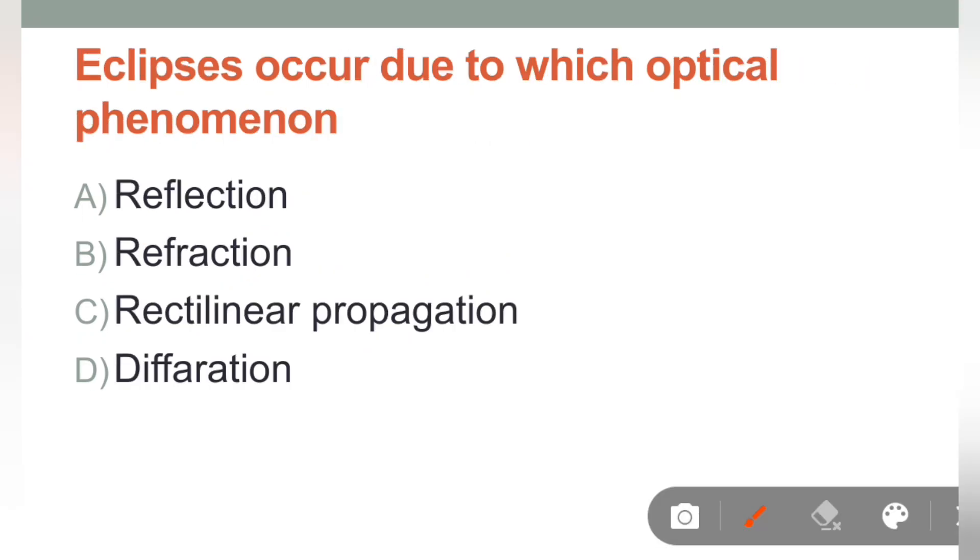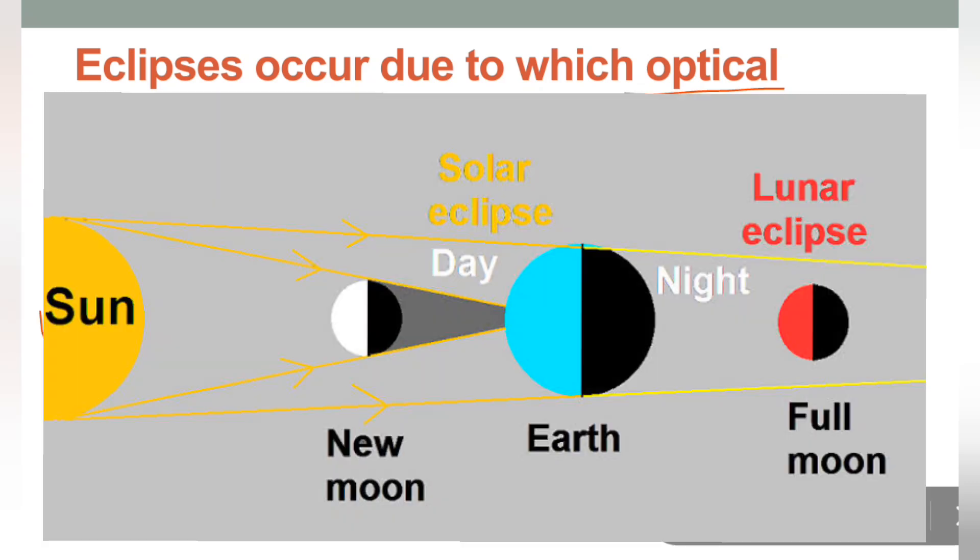Next question is: Eclipse occurs due to which optical phenomenon? Optical, matlab light se related hai. In mein se kaun sa light ka phenomena hai, jis se ki eclipse, matlab jo hum bolte hai, surya grahan aur chand grahan, eclipse, woh kis phenomena ki vajah se bante hai. Options aapko diye rakhe hai, light ke hi phenomena hai: reflection, refraction, diffraction, aur rectilinear propagation. Is mein jo sabse alag, aapne nahi suna hoga, that is rectilinear propagation. So, aap aise yaad kar sakte ho, rectilinear ka matlab hota hai ek line mein.